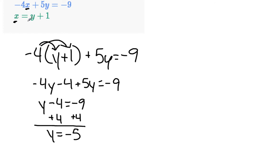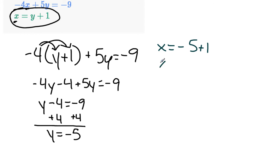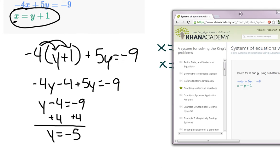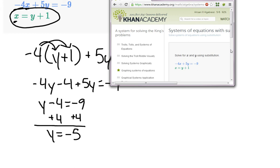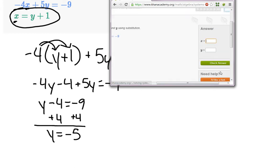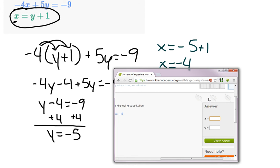Now that we know y is negative 5, we substitute back into x equals y plus 1: x equals negative 5 plus 1, which is negative 4. So x equals negative 4 and y equals negative 5. We enter negative 4 and negative 5 into Khan Academy and it says correct!